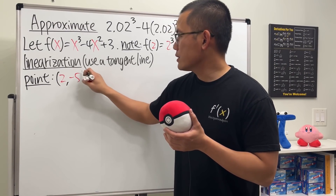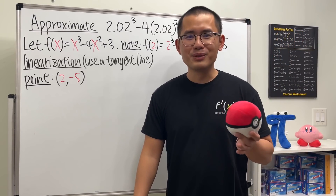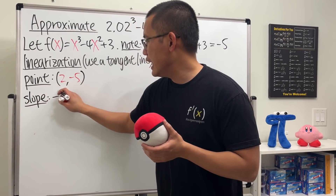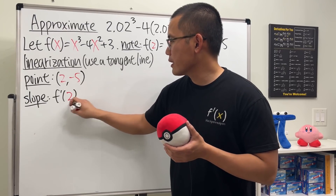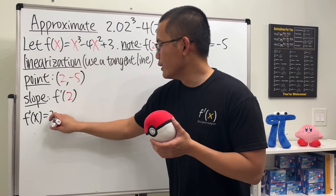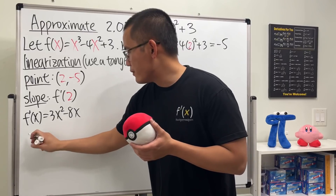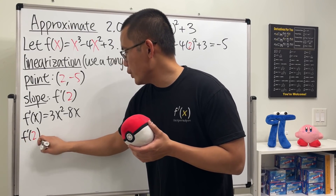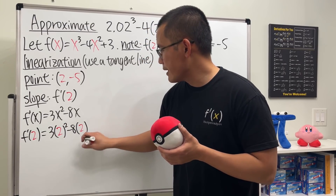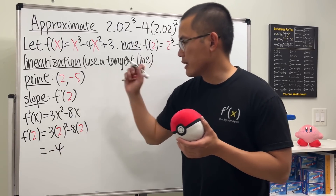The slope of the tangent line is exactly the derivative — that's why we need a function when using calculus. So the slope is f'(2). Differentiating: f'(x) = 3x² - 8x. Plugging in 2: 3(4) - 8(2) = 12 - 16 = negative 4. So the slope is -4.